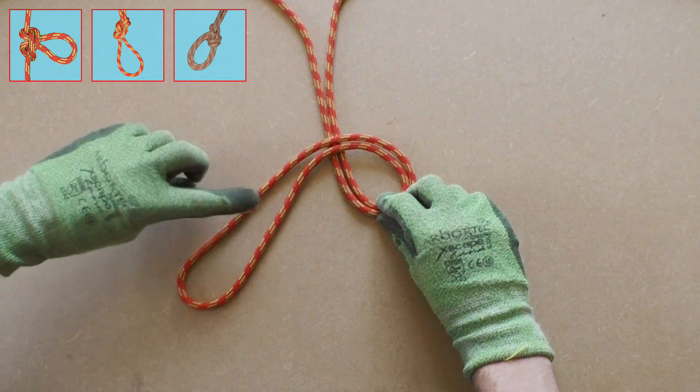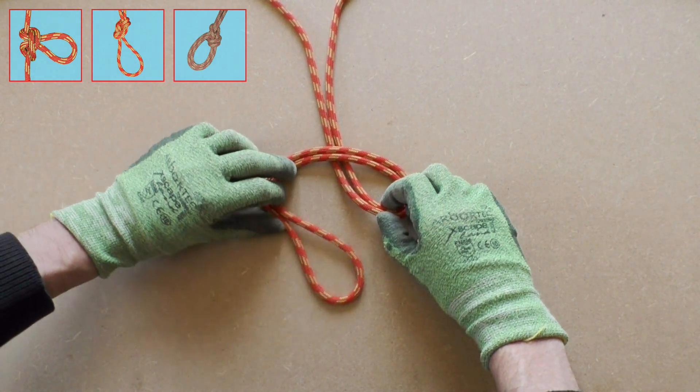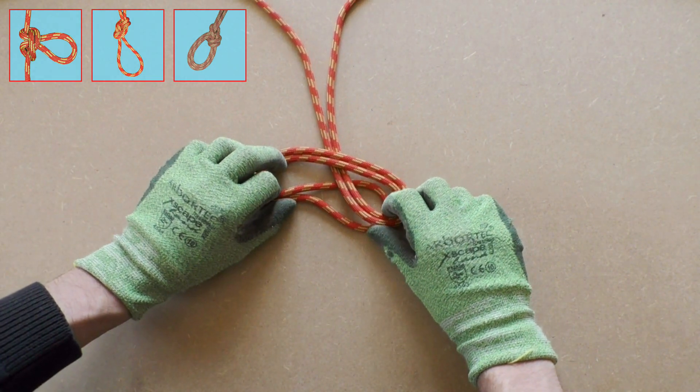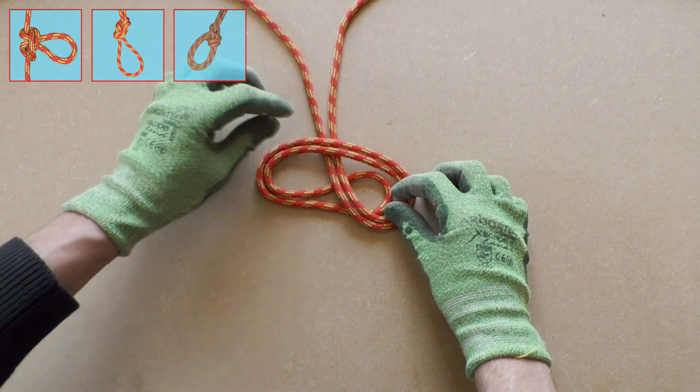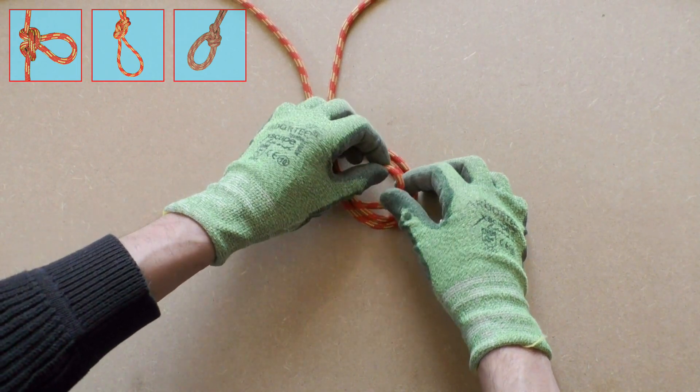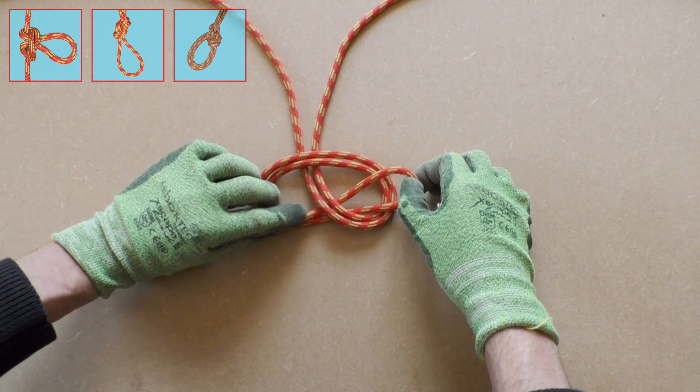The bowline on a bite is a variation on the popular bowline knot but then tied in the middle of a rope without having access to the ends. This is called tying it on a bite and therefore the name is bowline on a bite.